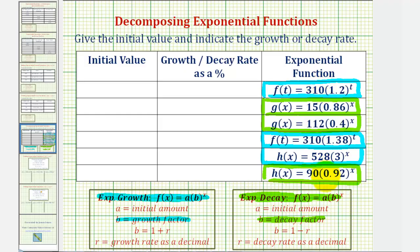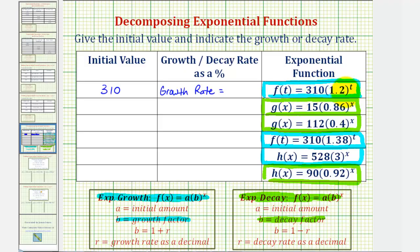Notice that in all these exponential functions, A is the initial amount or initial value, which we can easily identify. So for this first function, the initial value is 310. Now for the growth rate, we can find it using the equation B equals one plus R, since we know B is equal to 1.2. We can probably determine this mentally, but let's go ahead and show some work.